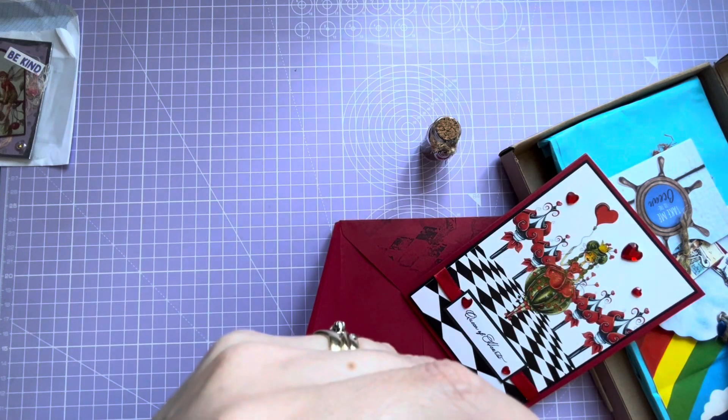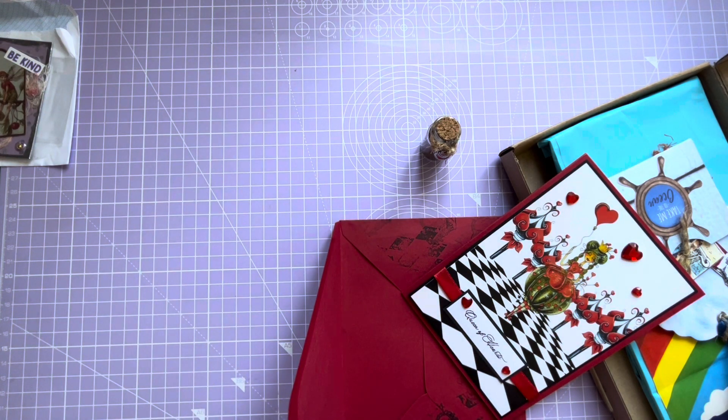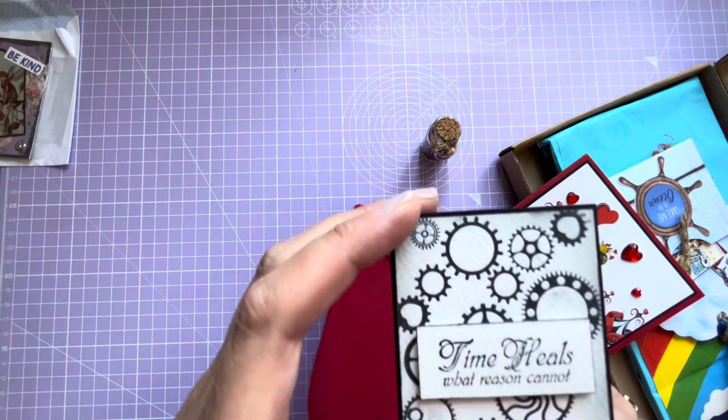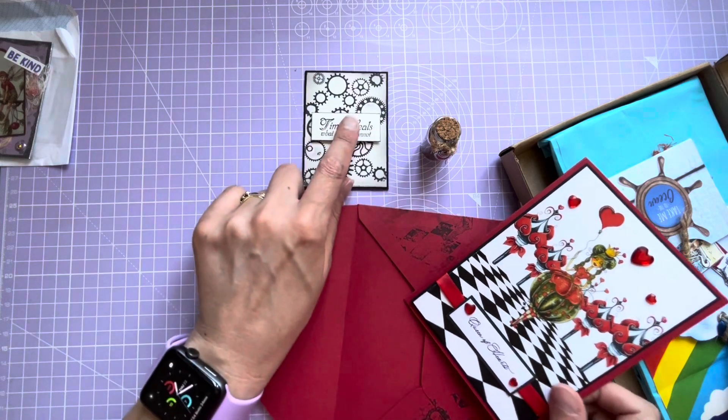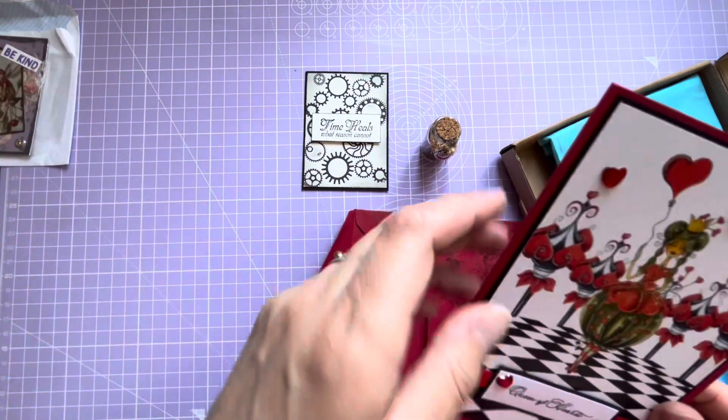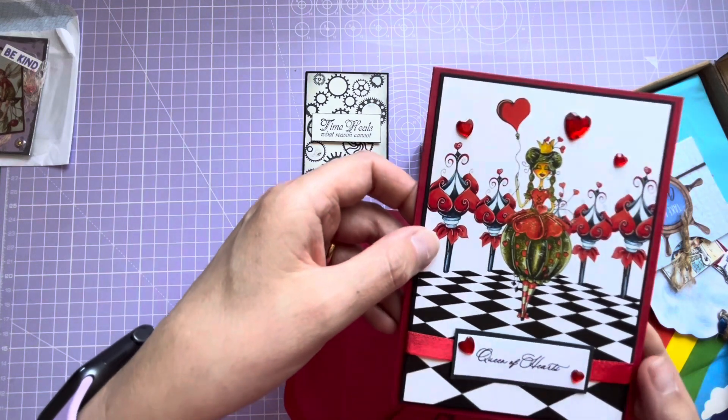'Time heals what reason cannot.' And on the back it says The Crafty C's. It says Maureen's birthday is on the 25th of January and Ashley's is on the 19th of August. And it says 'Time Heals.' That's beautiful, thank you for that! That's an ATC for my collection along with the one from Dee.